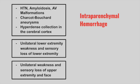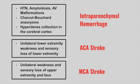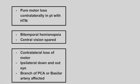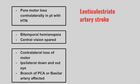Next is a patient with unilateral lower extremity weakness and sensory loss — this is an ACA stroke, a medial artery affecting the lower extremities. Next is a patient with unilateral weakness and sensory loss in the upper extremities and face — this is a middle cerebral artery (MCA) stroke. Next is a patient with a purely motor stroke and a history of hypertension — this is a lenticulostriate artery stroke, where only the corticospinal tract is affected.